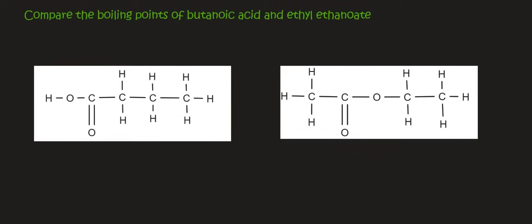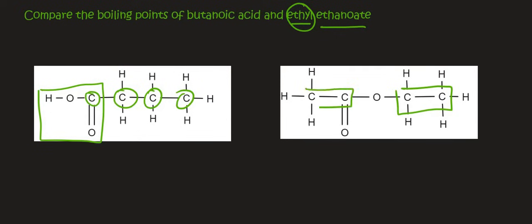Hello everyone, in this lesson we're going to compare the boiling points of butanoic acid, which is a carboxylic acid with four carbons. You can see here we've got the four carbons and then the carboxylic acid part. Then we've got ethyl ethanoate, which is an ester, which has an alcohol part with two carbons and a carboxylic acid with two carbons. Now, how can we compare these two? Is this a fair test?